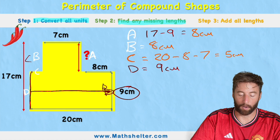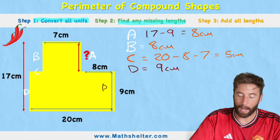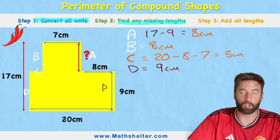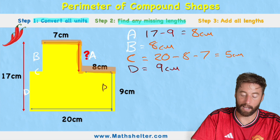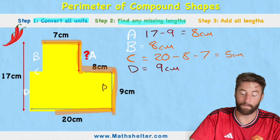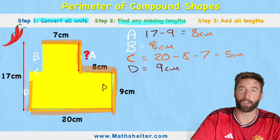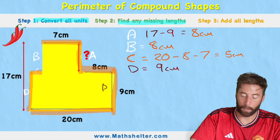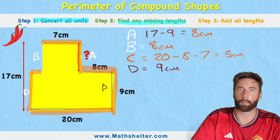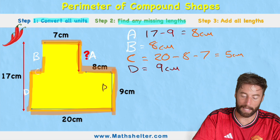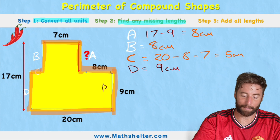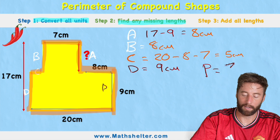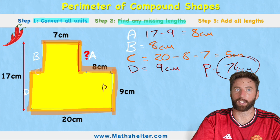Now we add all lengths, drawing around the shape as we go: 7 + A(8) = 15, + 8 = 23, + 9 = 32, + 20 = 52, + D(9) = 61, + C(5) = 66, + B(8) = 74. The perimeter of this compound shape is 74 centimeters.